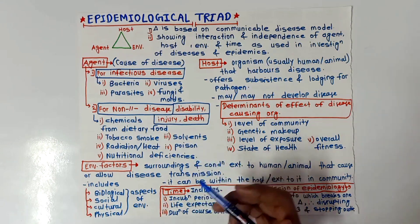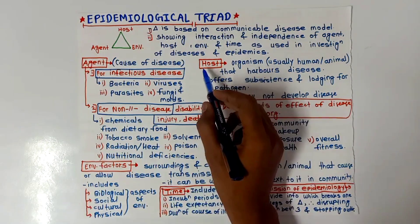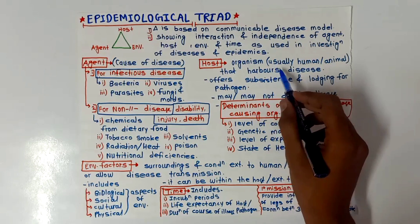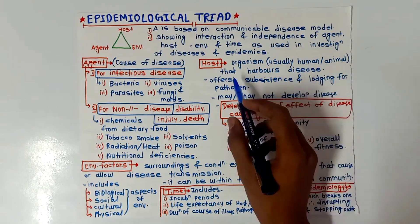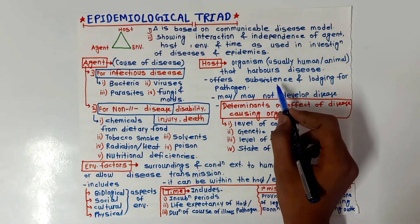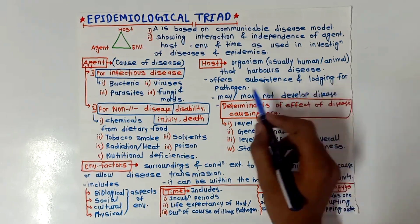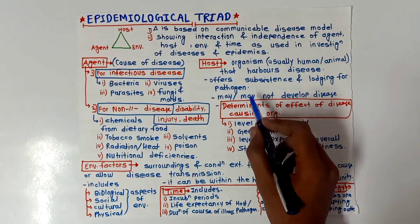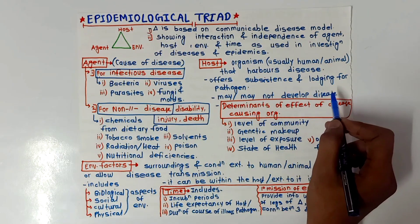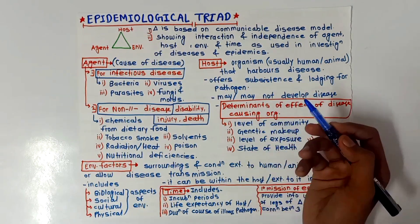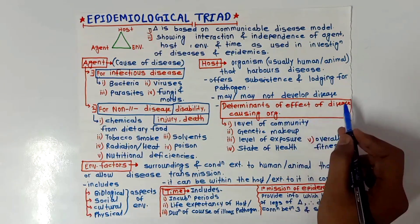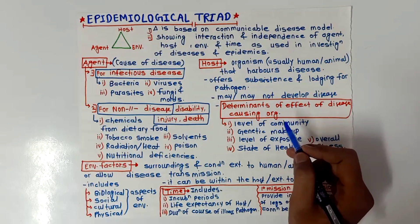Next is host. Host is an organism — usually human or animal — that harbors the disease. It offers subsistence and lodging for the pathogen and may or may not develop disease. The determinants determine the effect of the disease-causing organism on the host.